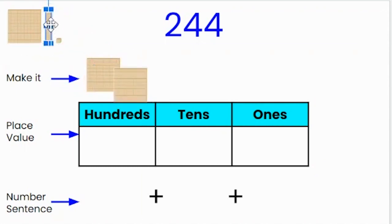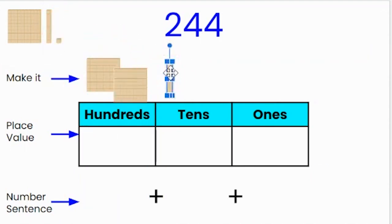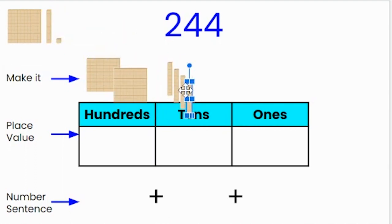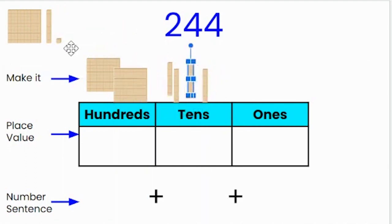I know that there are four tens — one, two, three, four. And finally, there are four ones — one, two, three, four.